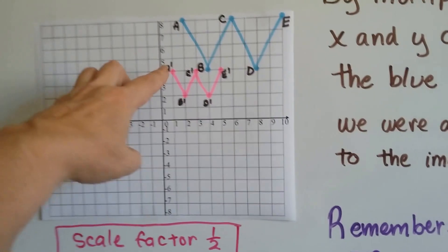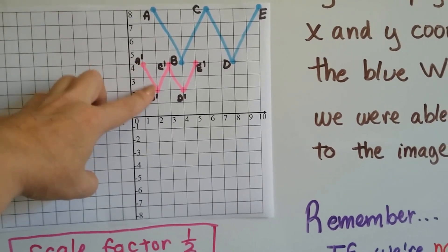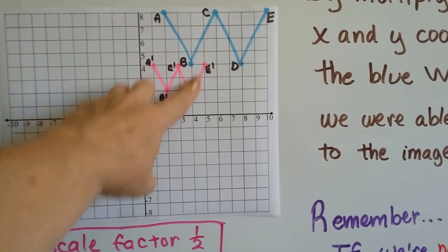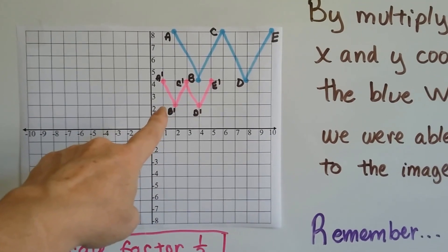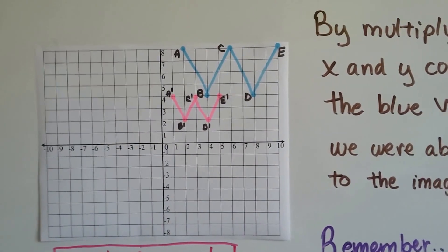We draw the lines connecting the points between them. And we see that we've got a W that is half the size of the blue one.